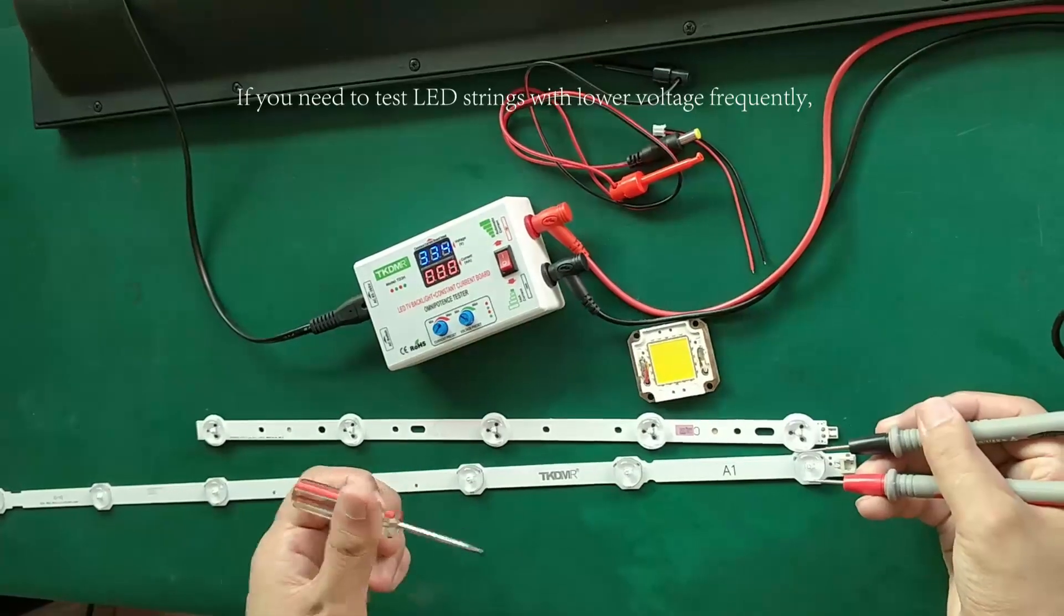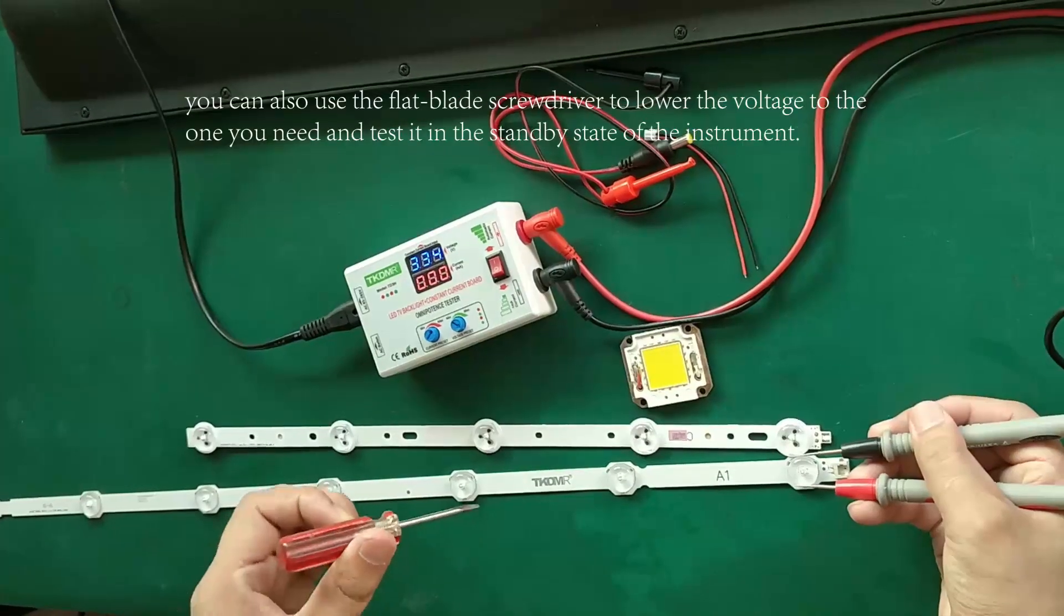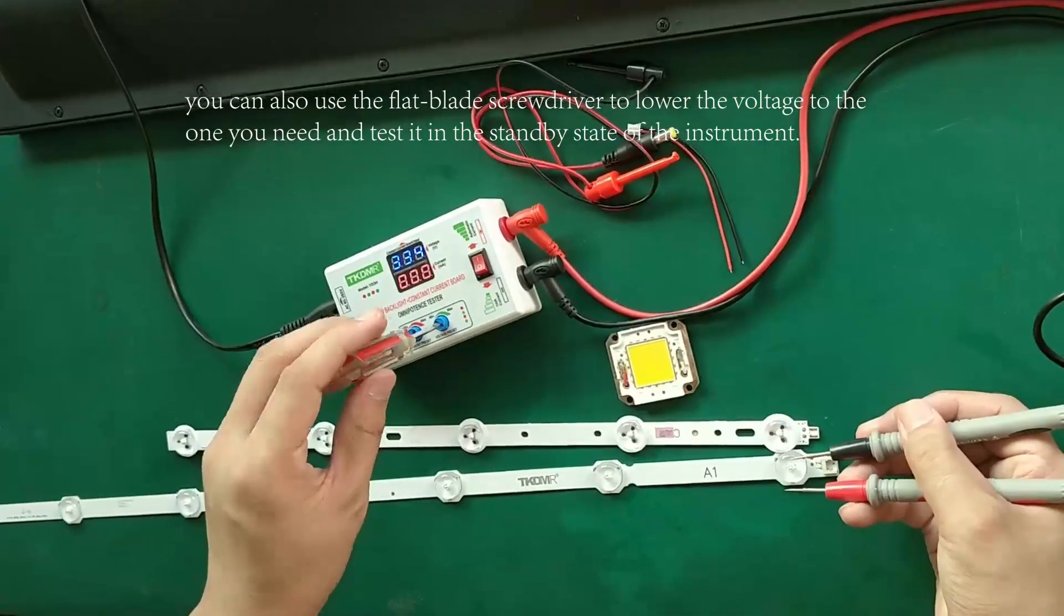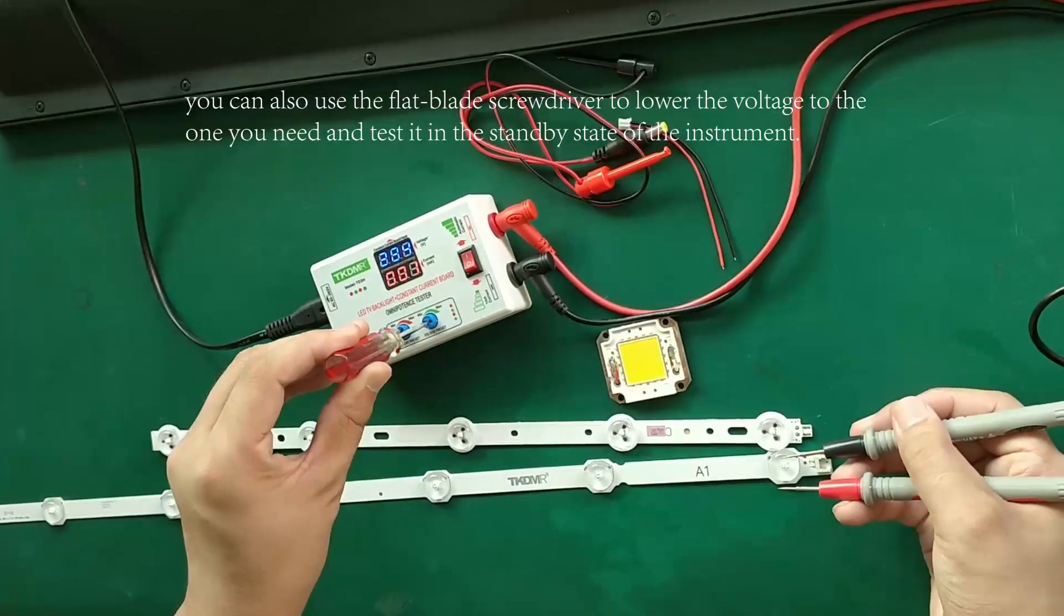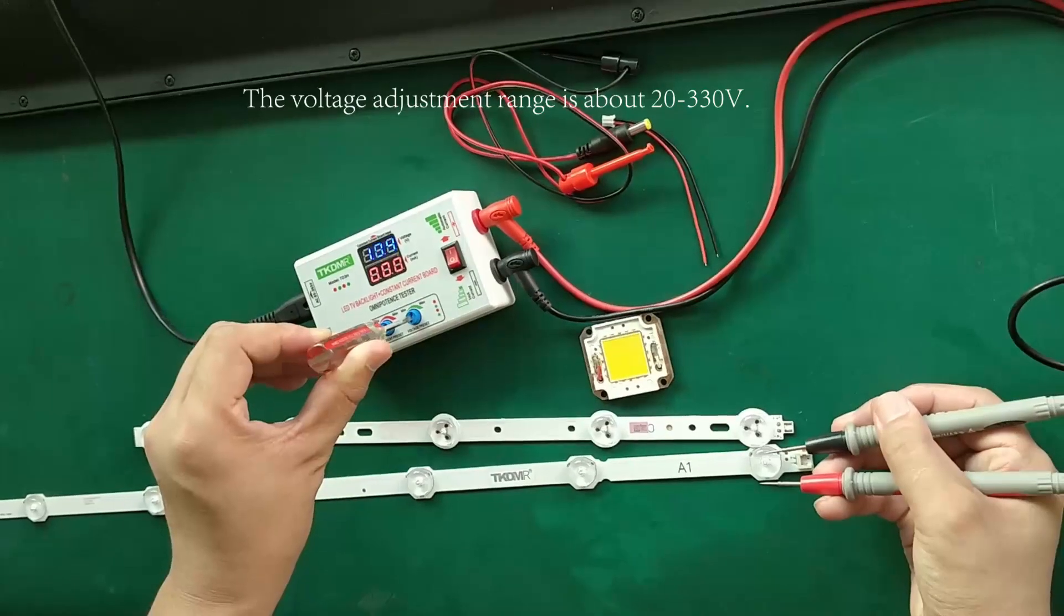If you need to test LED strings with lower voltage frequently, you can also use the flat blade screwdriver to lower the voltage to the one you need and test it in the standby state of the instrument. The voltage adjustment range is about 20 to 330.